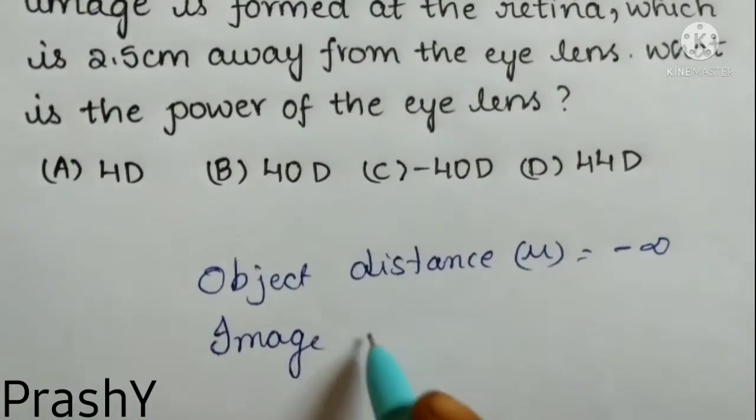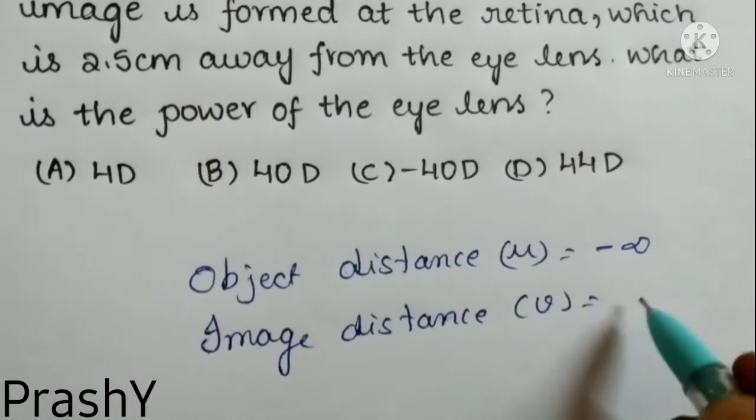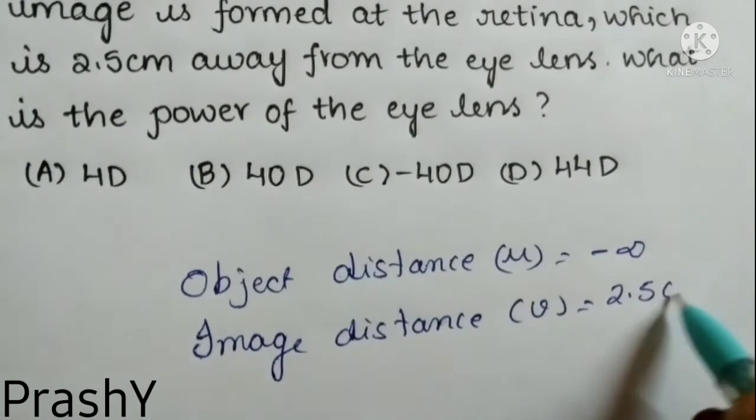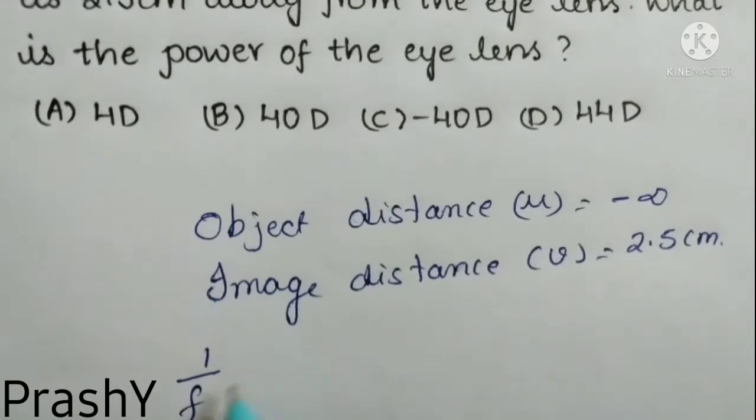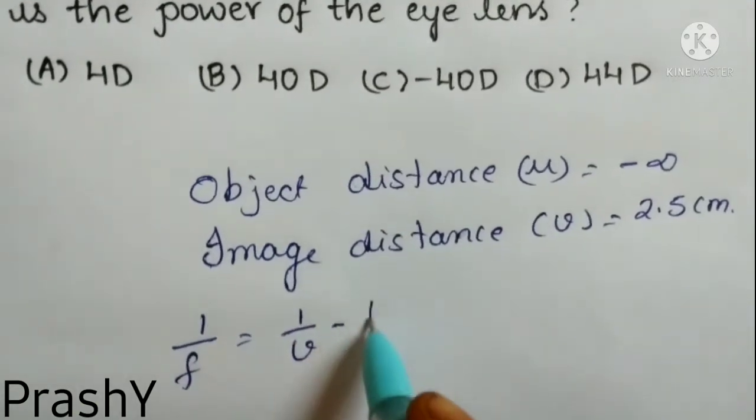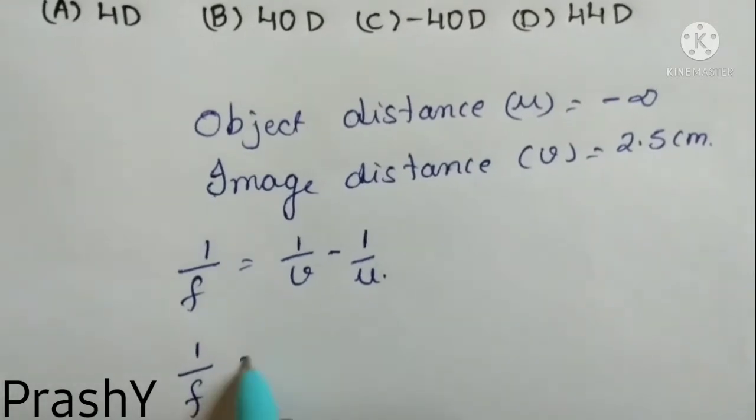From the formula 1 by f is equal to 1 by v minus 1 by u, so on substituting the values we will get 1 by f, so 1 by 2.5, and u can be, no need to consider u as we can neglect the object distance as it is undefined.